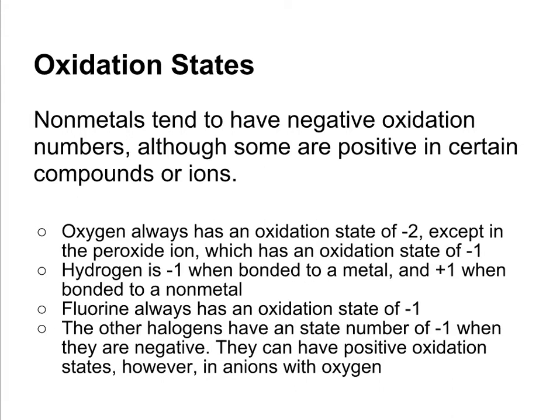Oxygen always has an oxidation state of negative two, except in the peroxide ion, which has an oxidation state of minus one. But 99.9% of the time, oxygen has an oxidation state of negative two. When hydrogen is bonded to a metal, it has an oxidation state of minus one, and it's plus one when bonded to a non-metal. You don't see metal hydrides very often, so hydrogen is usually going to be plus one.